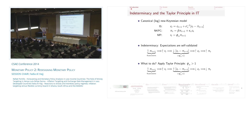The solution in the determinacy literature is to apply the Taylor Principle: respond aggressively to inflation, so the coefficient phi needs to be greater than one. In that case, even if you have these expectations, the government will raise the nominal interest rate enough to make the real interest rate go up, control demand pressures, and therefore inflation will go down. So there is no possibility of self-fulfilling expectation fluctuations.